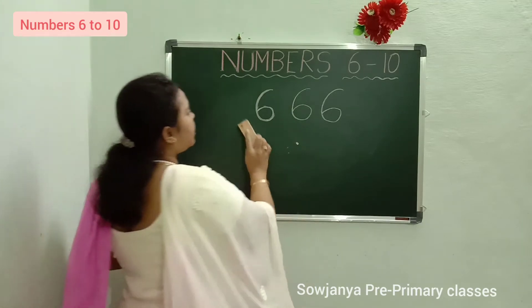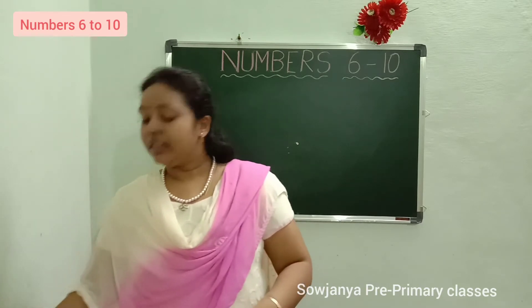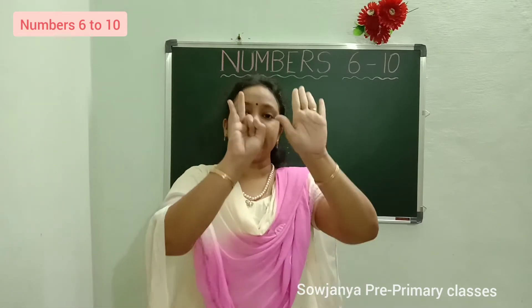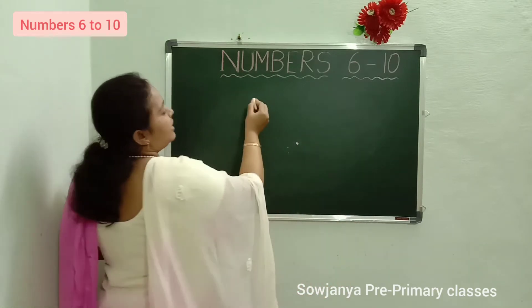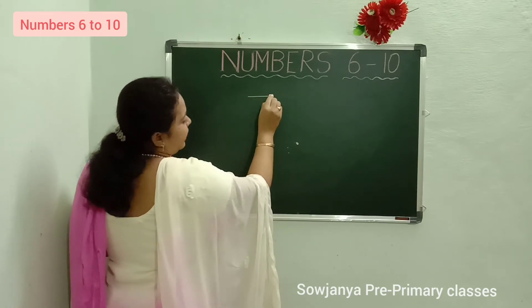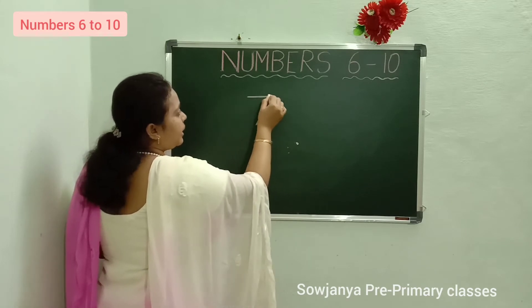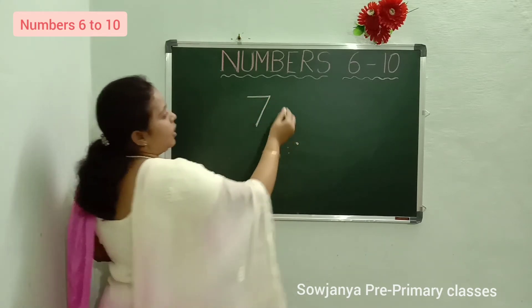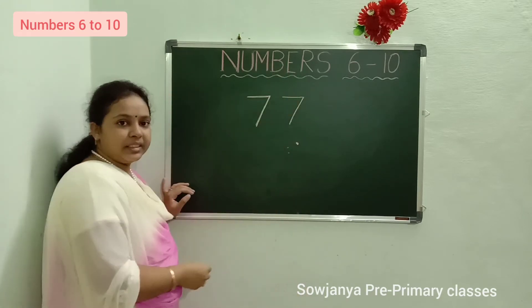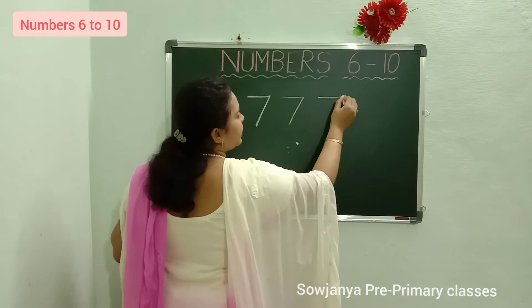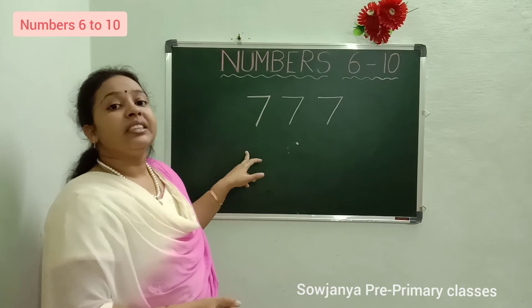What is this number? 6. 6 after? 7. How to write 7? It is also very easy children. Just put a sleeping line and a right slanting line. Sleeping line, right slanting line. 7. What is this number? 7.